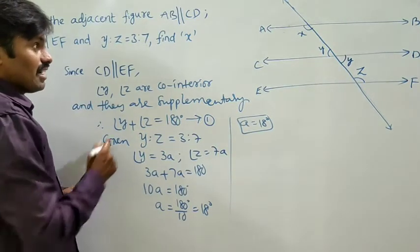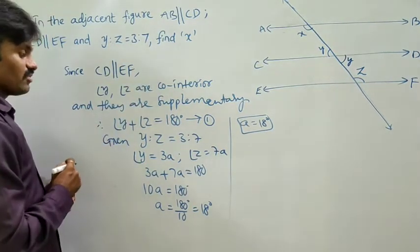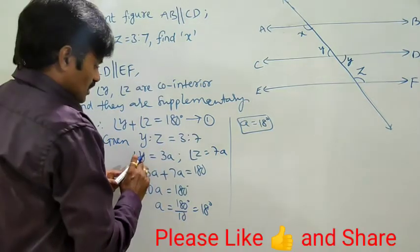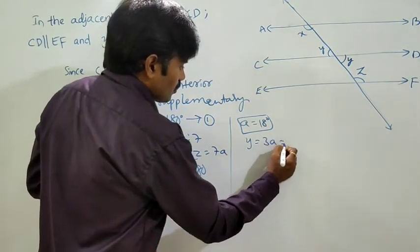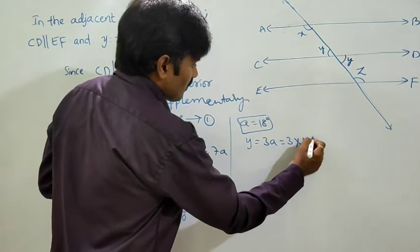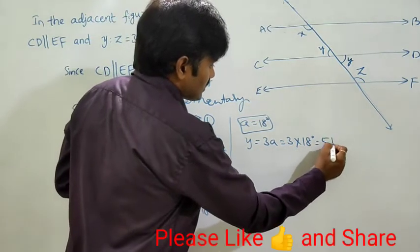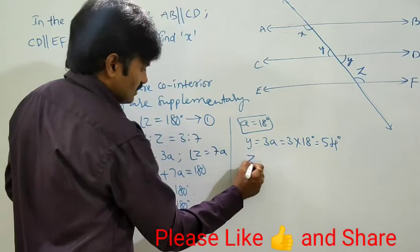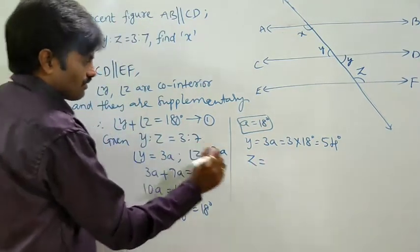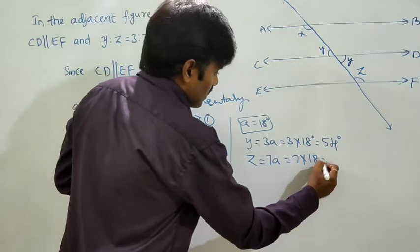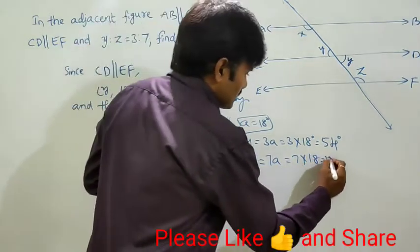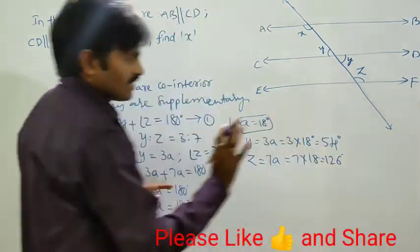But they asked us to find X value. So what is the Y value? Y is equal to 3A, so 3 into 18, since A value is 18, that's 54 degrees. Then Z is equal to 7A, so 7 into 18, that's 126 degrees. Total 180.